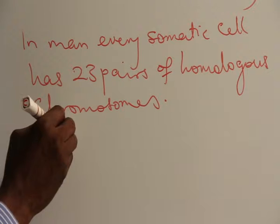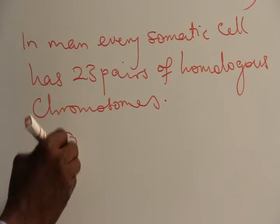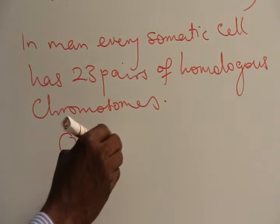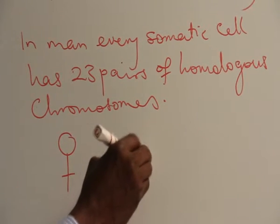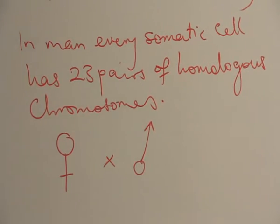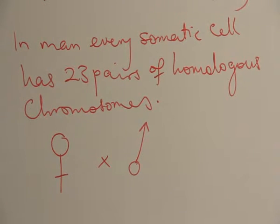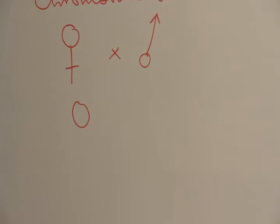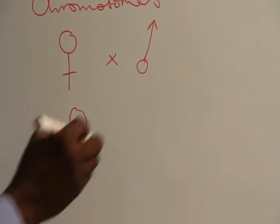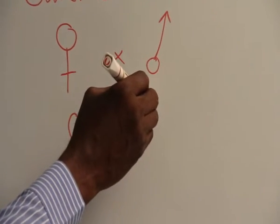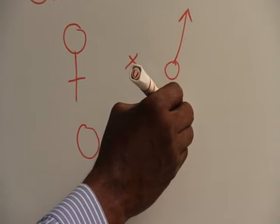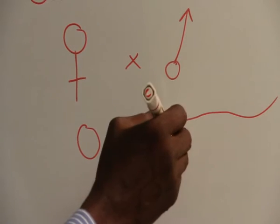Every man comes from a woman and a man. The woman produces an egg and the man produces a sperm.